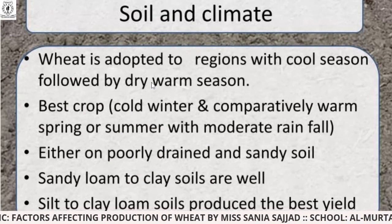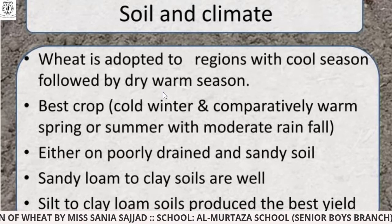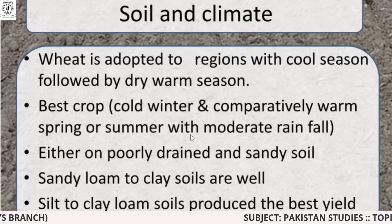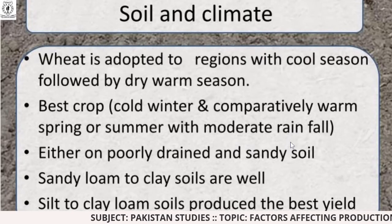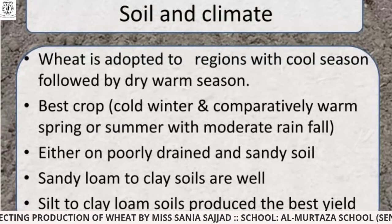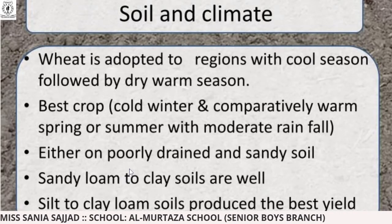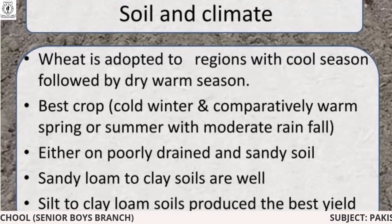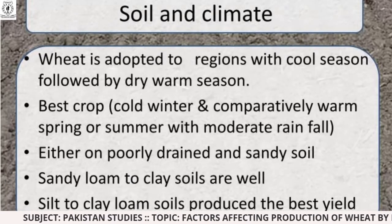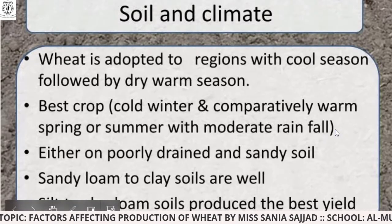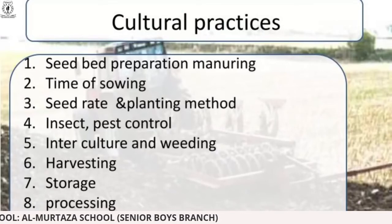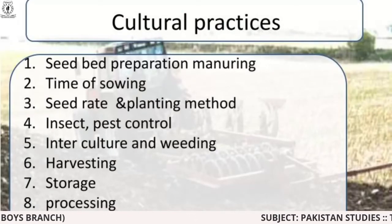Regarding soil and climate: wheat is adapted to regions with cool seasons followed by dry, warm seasons. It needs cold winters and a comparatively warm spring or summer with moderate rainfall — in warm temperatures there is high crop growth. Sandy loam to clay soils are good for wheat. Poorly drained and sandy soil cannot support wheat in abundance, while silt to clay loam soils produce the best yields.